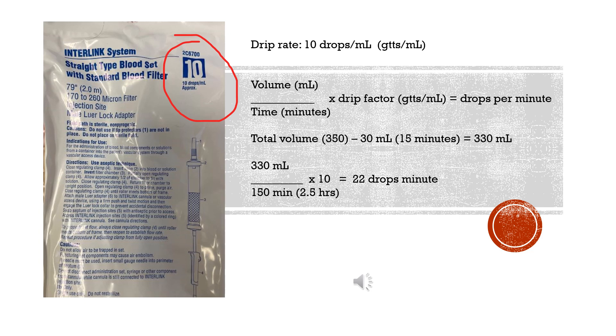And we'll multiply that by the drip rate, and that gives us about 22 drops per minute. So you can see you don't really need to manipulate the drops that much after your starting rate.